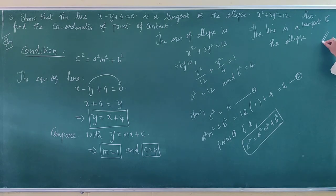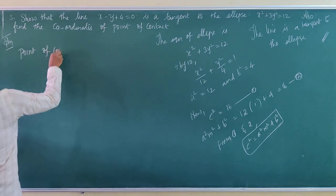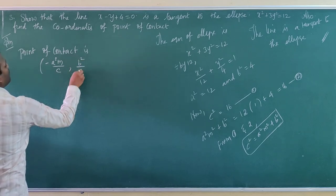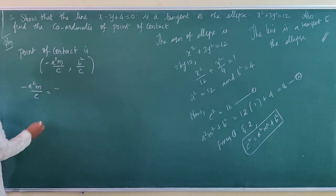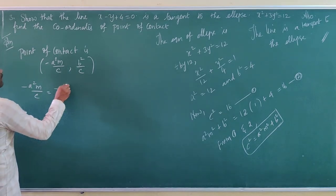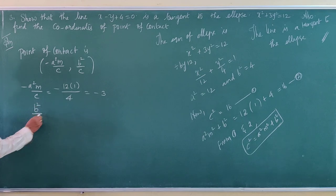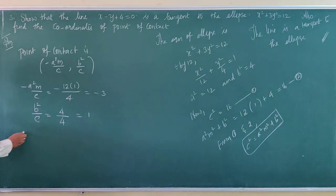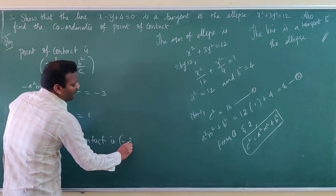Next, we find the point of contact. The formula for the point of contact is given by (minus a squared m over c, b squared over c). Substituting the values: minus a squared m over c equals minus 12 times 1 over 4, which gives minus 3. And b squared over c equals 4 over 4, which equals 1. Therefore, the point of contact is (minus 3, 1).